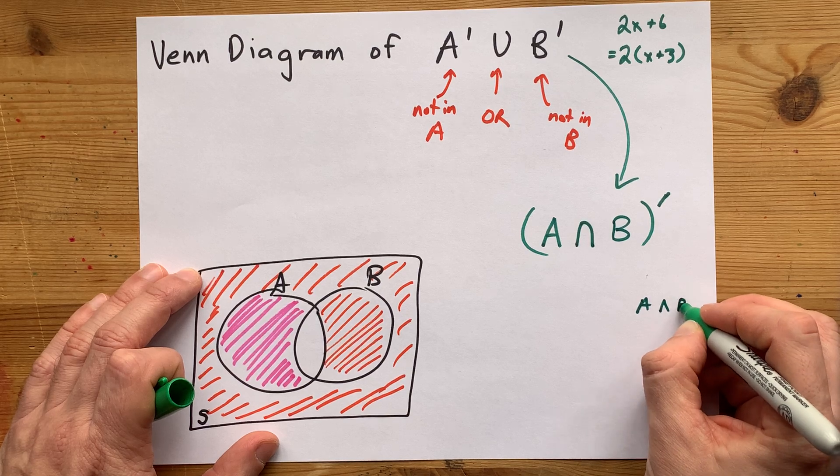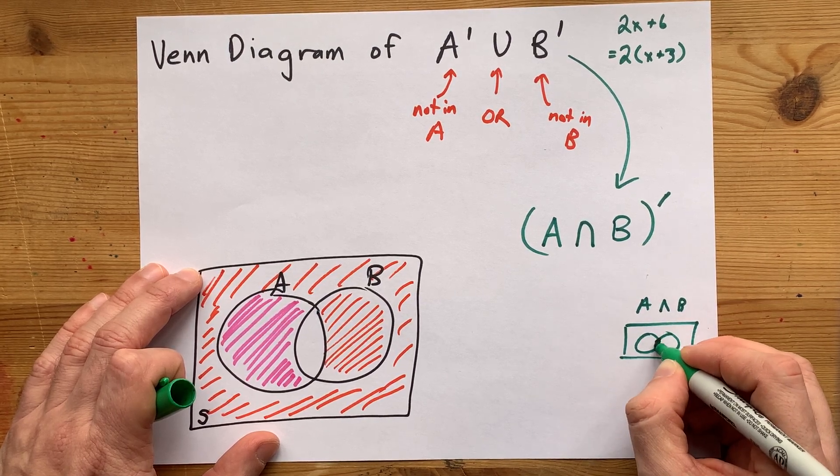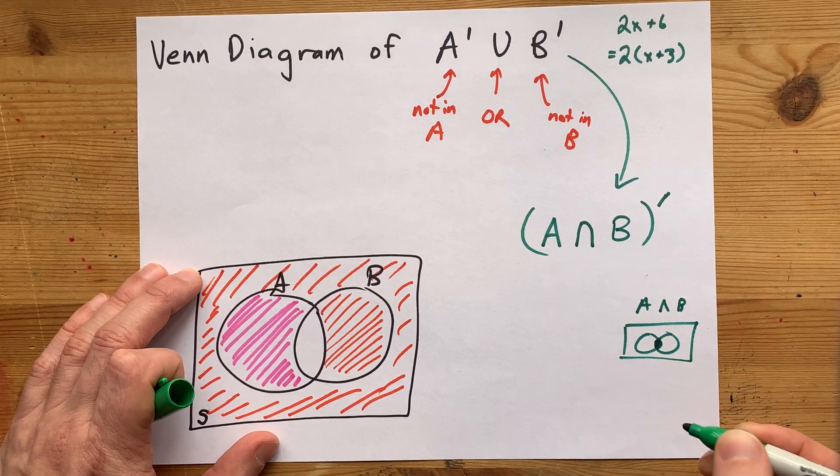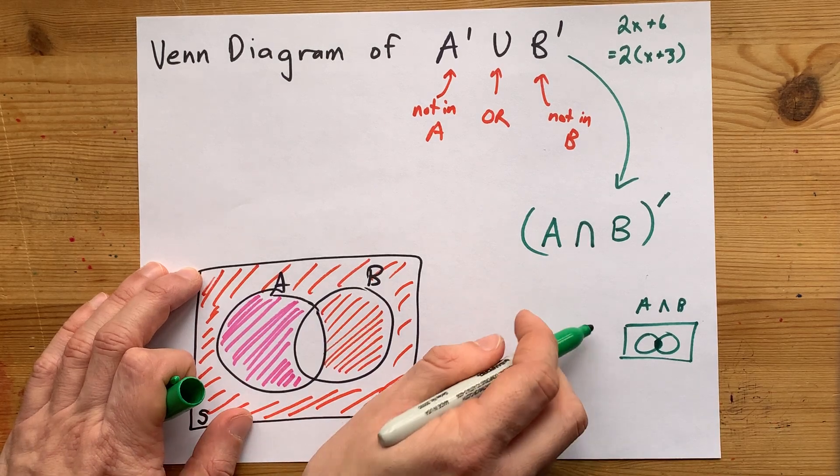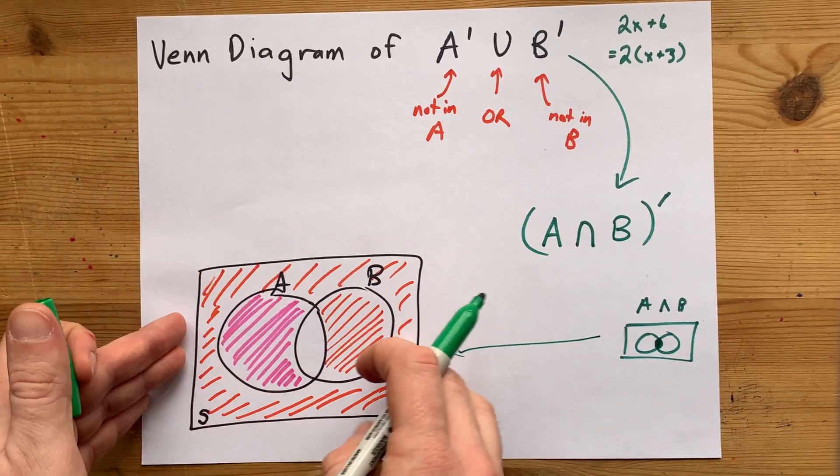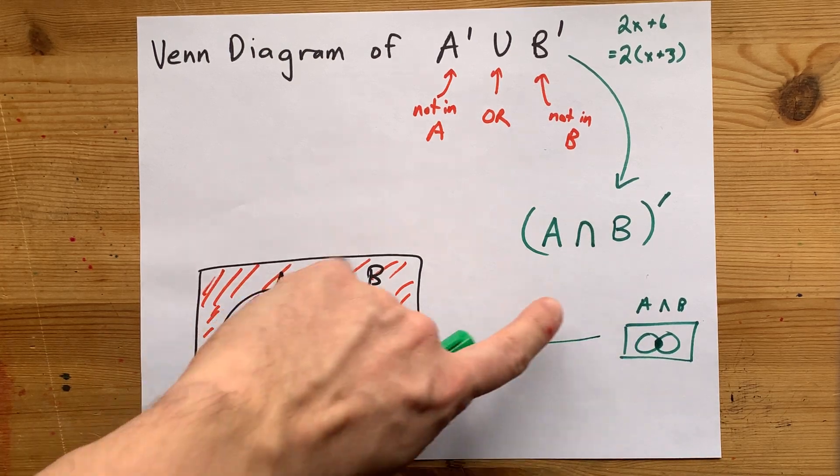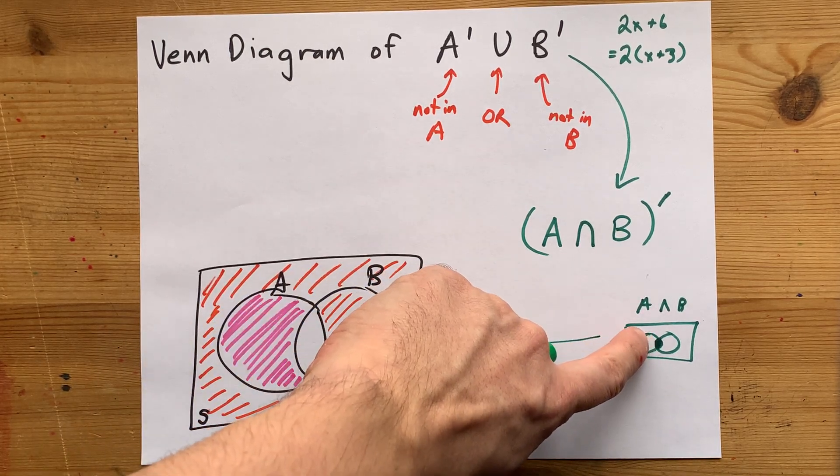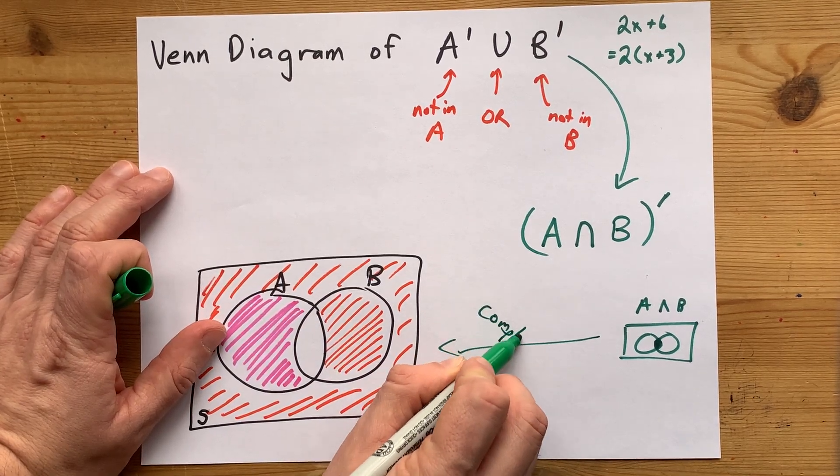Well, just to emphasize that to you, A intersect B is actually only this section that's in between the two circles. And then when you complement that, you end up with this. The sections that were not shaded here are shaded here. And the section that was shaded here is not shaded here. That's the effect of the complement.